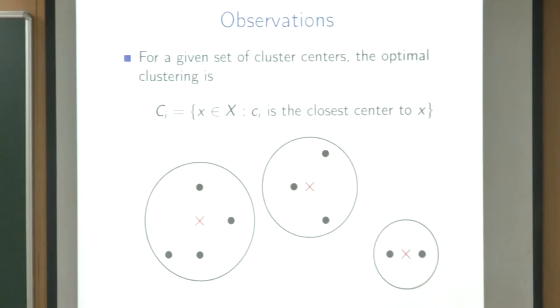Vice versa, for any distance: if we're given a set of cluster centers, we can always determine the optimal clusters. Since each point pays the distance to its cluster center, it always makes sense to assign each point to the cluster with the closest center. Whenever we have a fixed set of cluster centers, we can always forget about the explicit partition — the clustering follows from the centers.